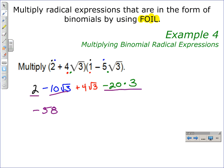And these two radical terms are like terms because they have the same index, they happen to be square roots, and they have the same radicand. Negative 10 square roots of 3 plus 4 square roots of 3 will give negative 6 square roots of 3.